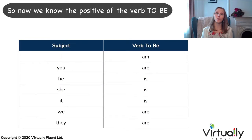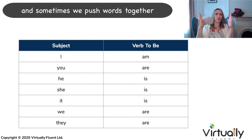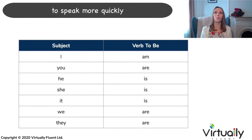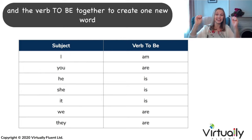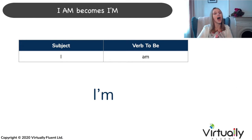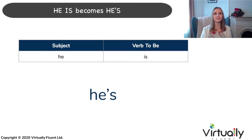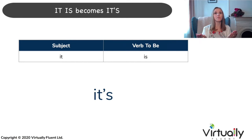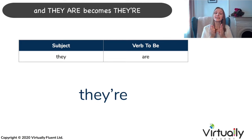So now we know the positive of the verb to be. However, in English, we are very lazy when we speak and sometimes we push words together to speak more quickly. With the verb to be, we push the subject and the verb to be together to create one new word. I am becomes I'm. You are becomes you're. He is becomes he's. She is becomes she's. It is becomes it's. We are becomes we're. And they are becomes they're.